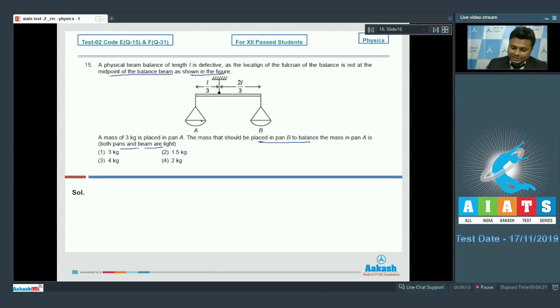Now according to the question, 3 kg is kept here in A and the question is asking what mass m should be kept in pan B so that the system remain at rotational equilibrium. Since system is at rotational equilibrium, therefore torque, or the total torque about this point O, should be 0.